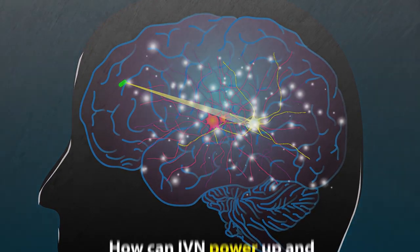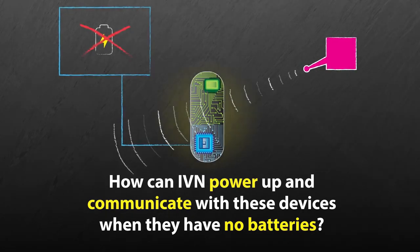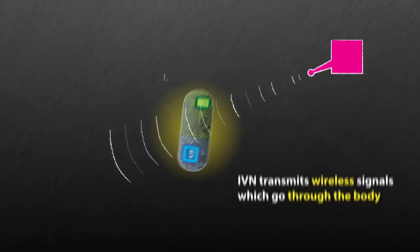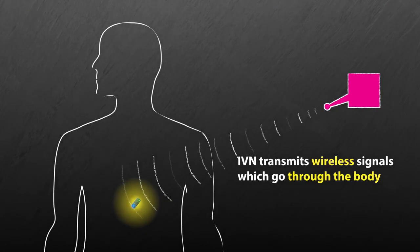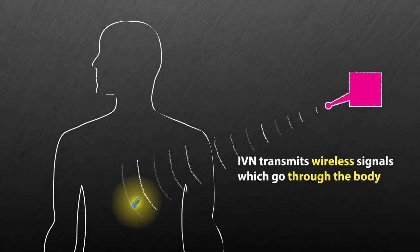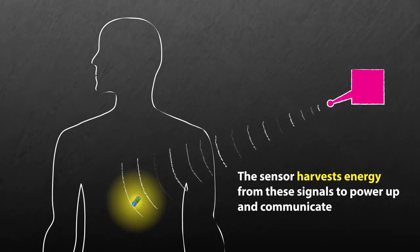So how can IVN power up and communicate with these devices when they have no batteries? When IVN transmits a wireless signal, the signal goes through the body and reaches the tiny implanted sensor. The sensor harvests energy from these signals to power up and communicate.